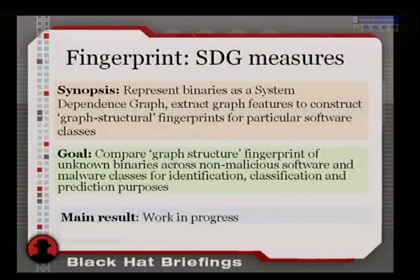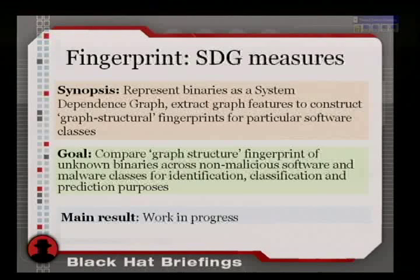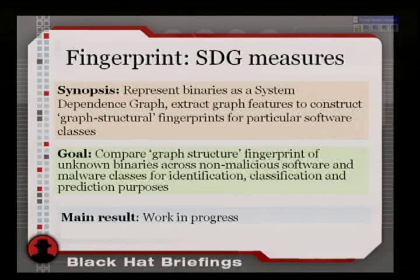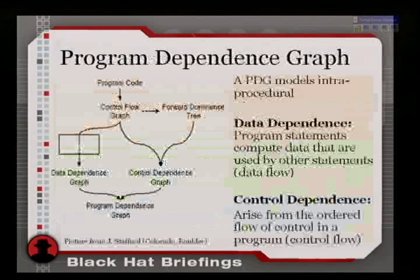The final approach, after fingerprinting on opcodes and fingerprinting on API calls, is on graph models. The key idea: represent the program as a graph, figure out some metrics of this graph, and construct a fingerprint that can be used in a statistical manner for classification.